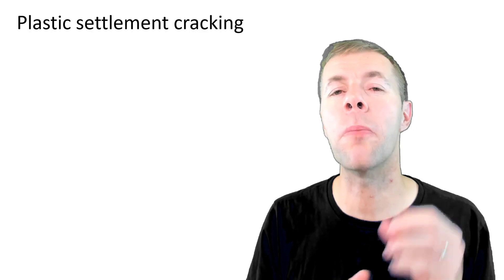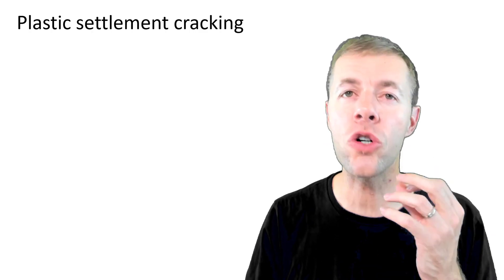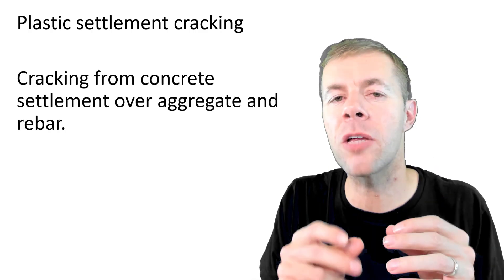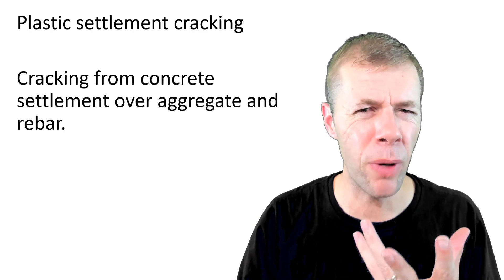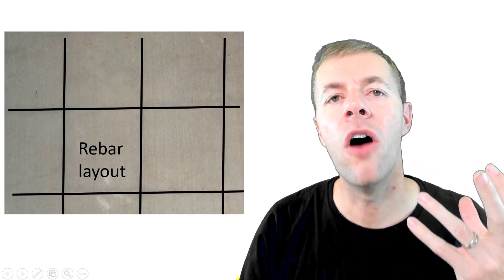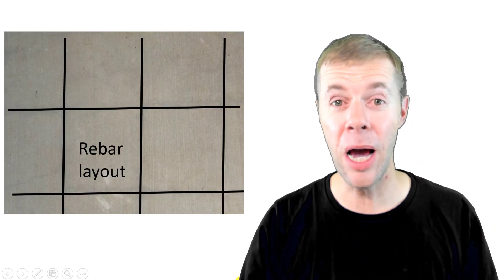Now another type of cracking is called plastic settlement cracking. It's cracking from concrete settlement either over aggregate or over rebar. This is what some of it looks like. You see these cracks that are forming, they seem to be kind of perpendicular to one another. They actually follow the pattern of the rebar inside the concrete.